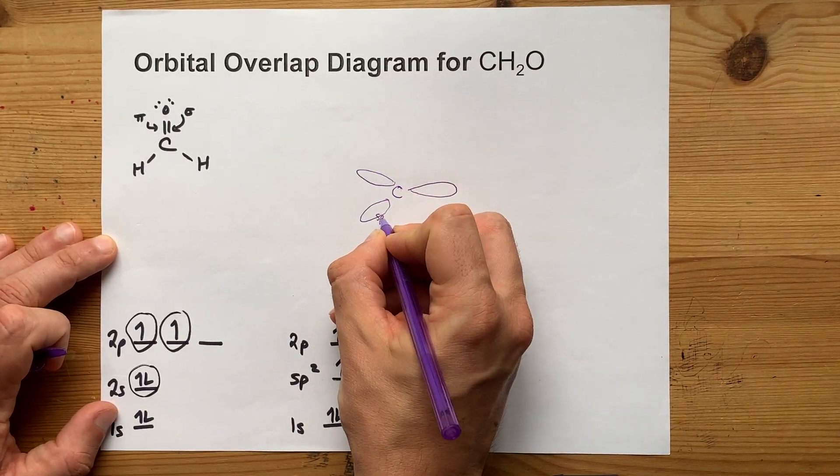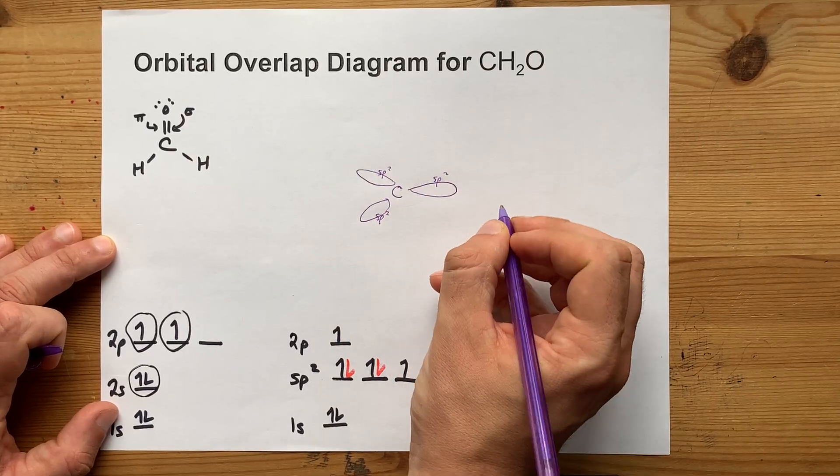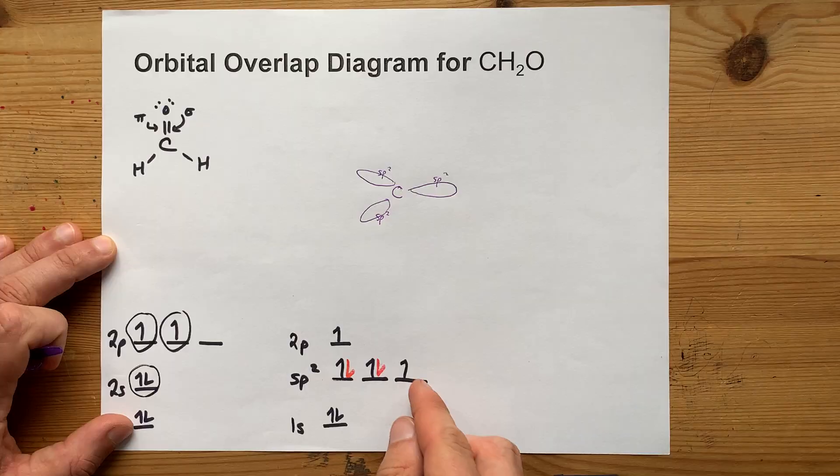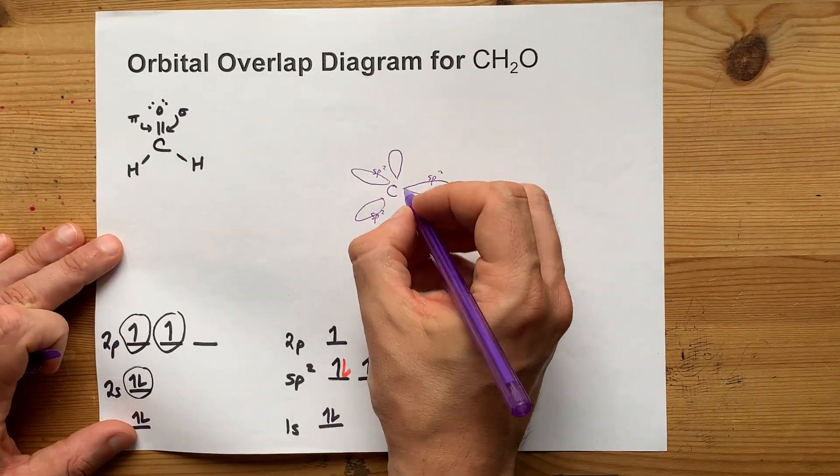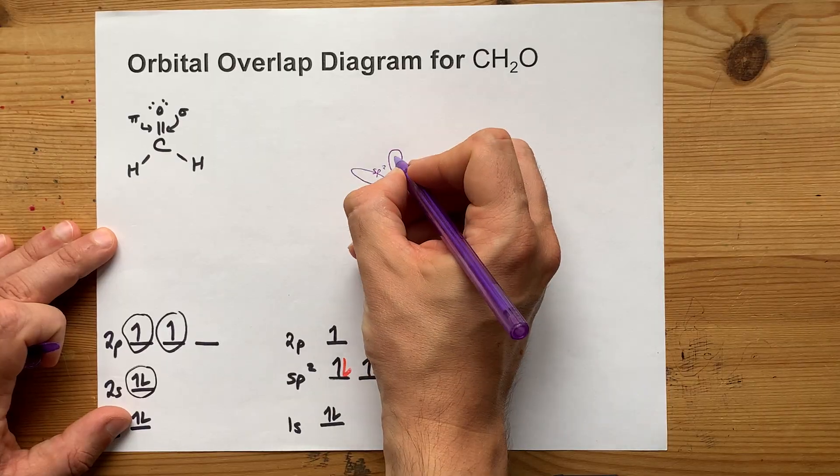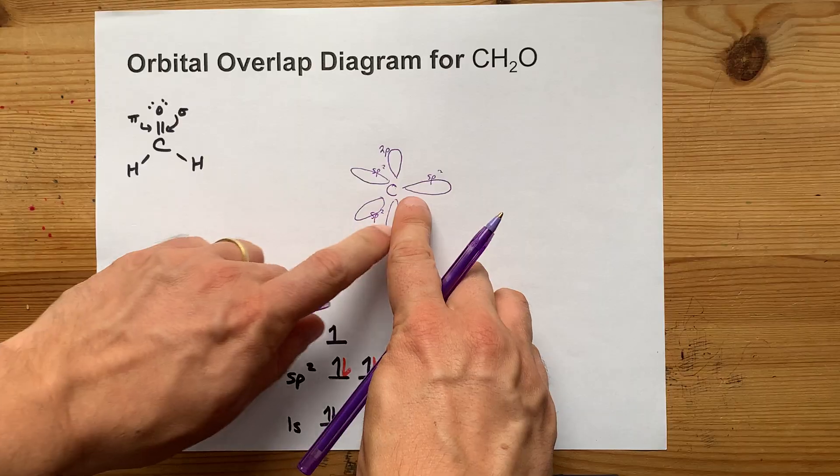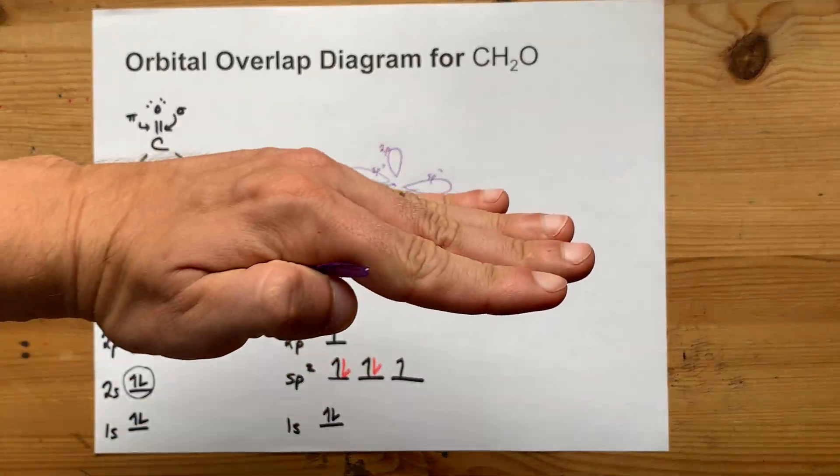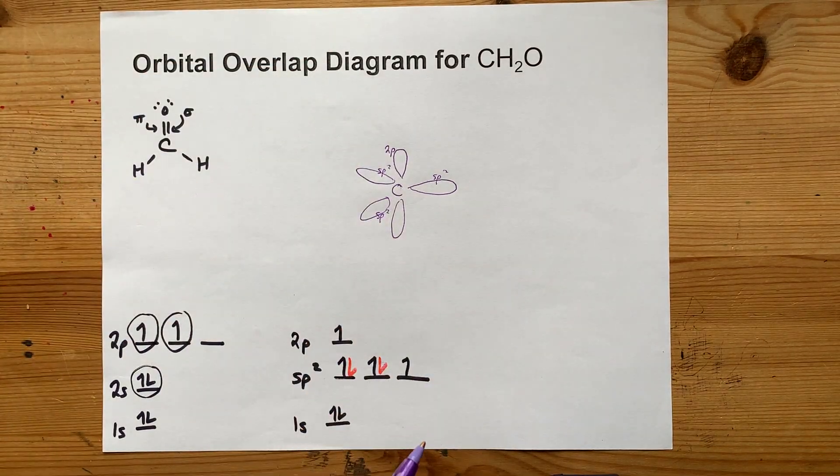These are each sp² hybridized orbitals. And the 2p leftover orbital goes above and below that plane. I'm going to label it 2p and leave it there. Please note, this is trigonal planar along the horizontal plane. And these are above and below the bond axis.